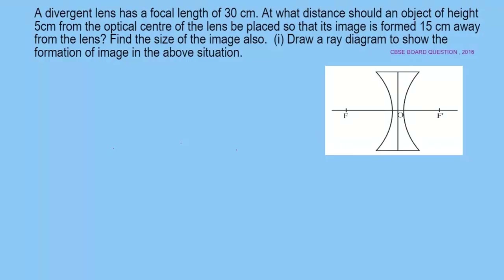Hello everyone, welcome back. Let's have a look at the next question. The next question is a numerical from the light chapter and it reads: a divergent lens has a focal length of 30 centimeter. At what distance should an object of height 5 centimeter from the optical center of the lens be placed so that its image is formed 15 centimeter away from the lens? Find the size of the image. Also draw a ray diagram to show the formation of image in the above situation.